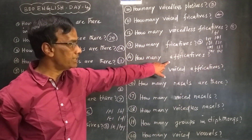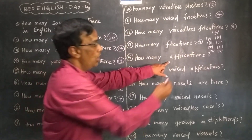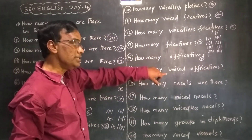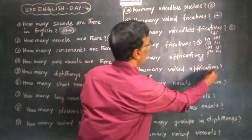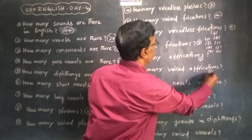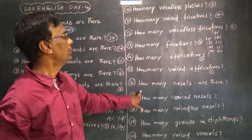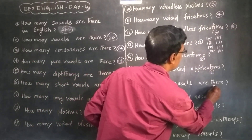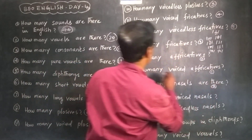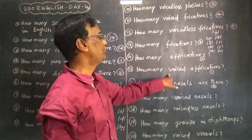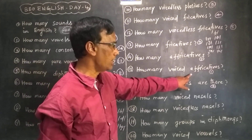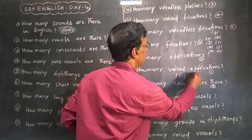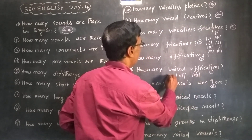How many fricatives are there? There are two fricatives. How many voiced fricatives? There are only one. How many nasals are there? There are three nasals. How many voiceless affricates are there? Two.